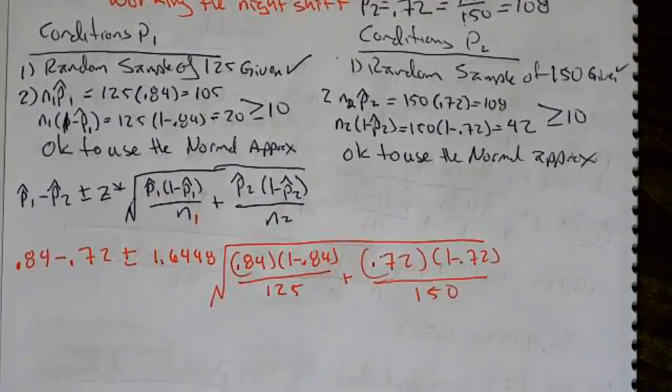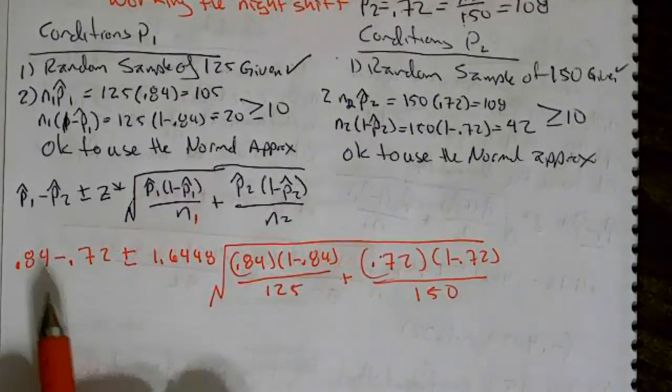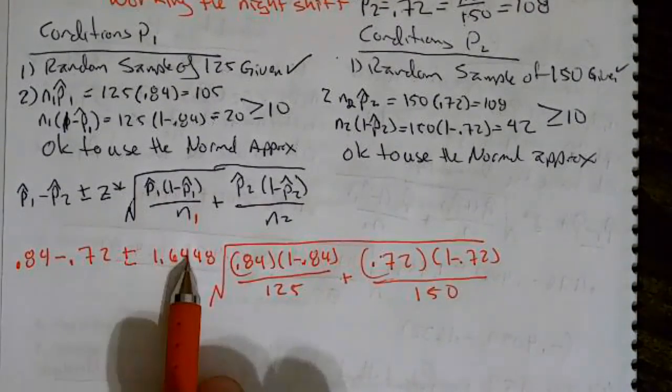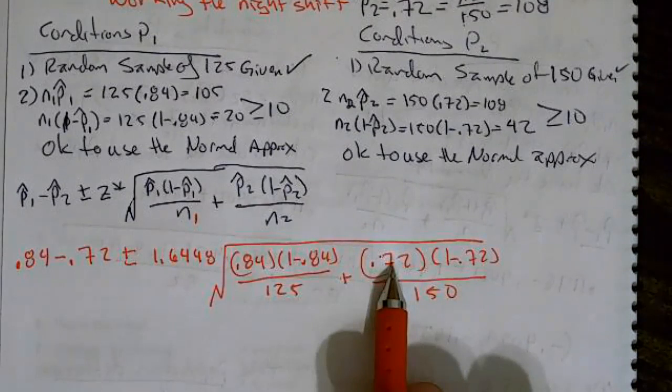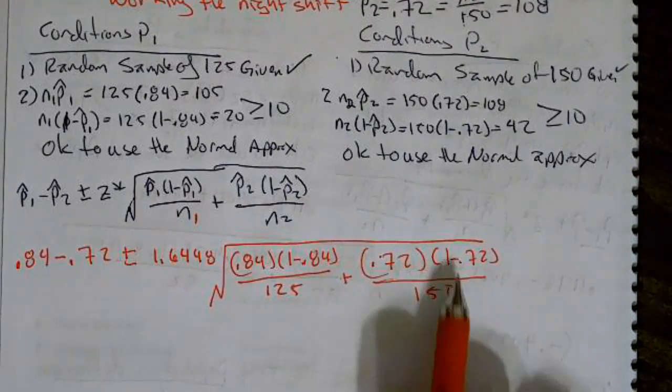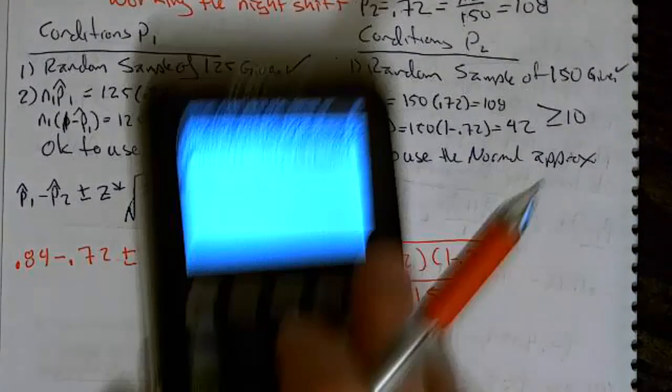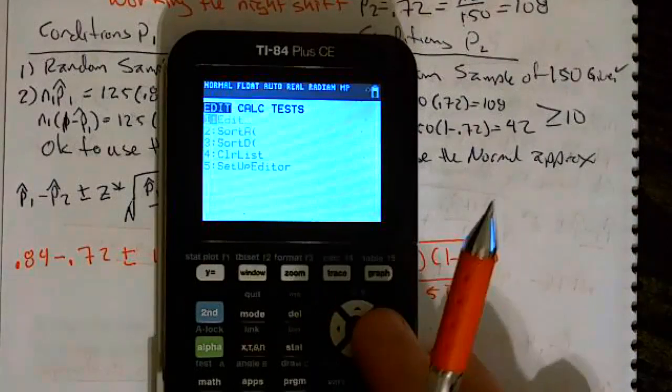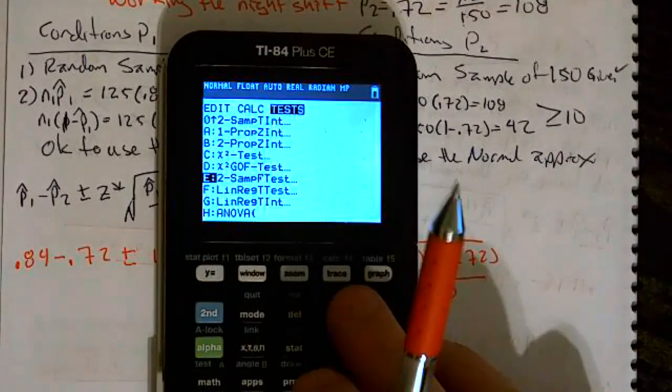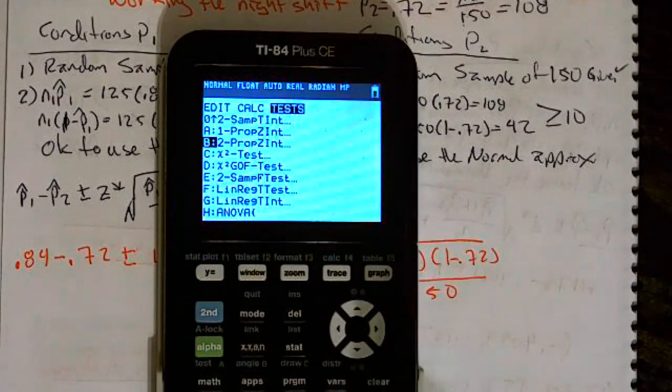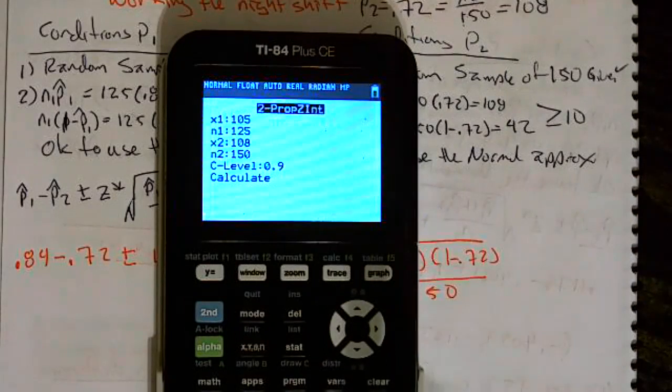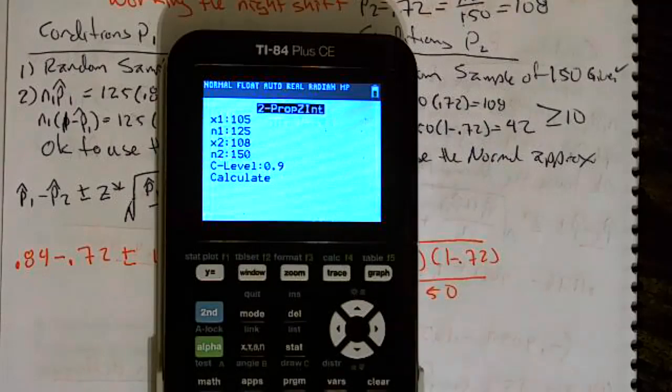Now that we've plugged that in, because that's P hat 1, P hat 2, Z star, P hat 1, 1 minus P hat 1 over N1, P hat 2 times 1 minus P hat 2 over N2. Now we plug that in. We're going to scroll way down on the calculator stat test to proportion Z interval. Once again, that's letter B. And I'm going to do this one a little bit different.